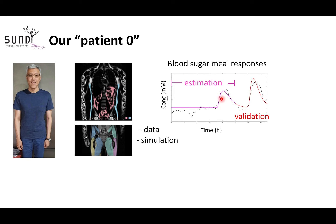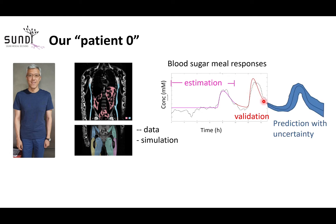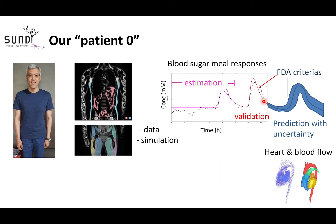We train the model and its personalized parameters on the breakfast response, then see if we can correctly predict the lunch response based only on what the person ate. Since we could, we can make predictions with uncertainty — which together are the main criteria for the FDA.